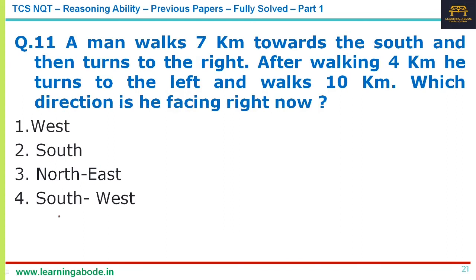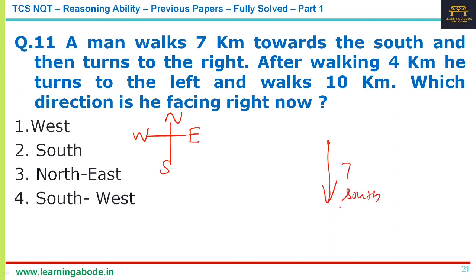The last question is direction-based. Always draw a direction guide (N/S/E/W) for clarity. A man walks 7 km south, turns right (now facing west) and walks 4 km, then turns left (now facing south) and walks 10 km. He is now facing south — answer option 2.